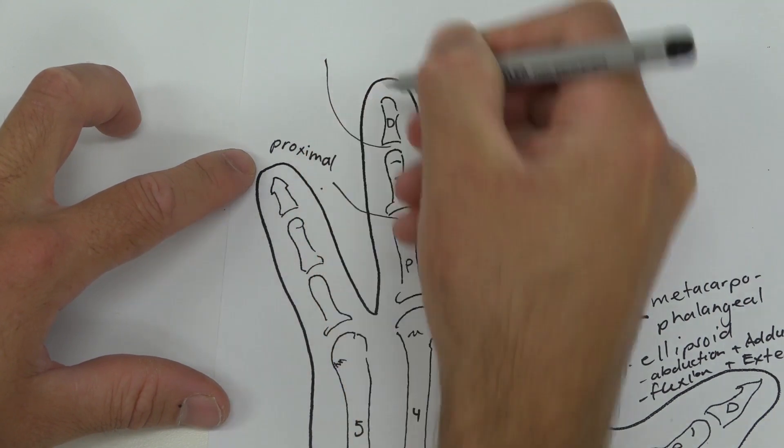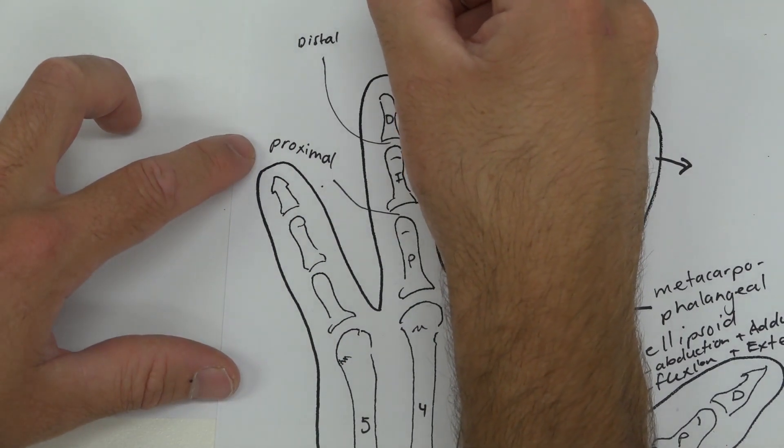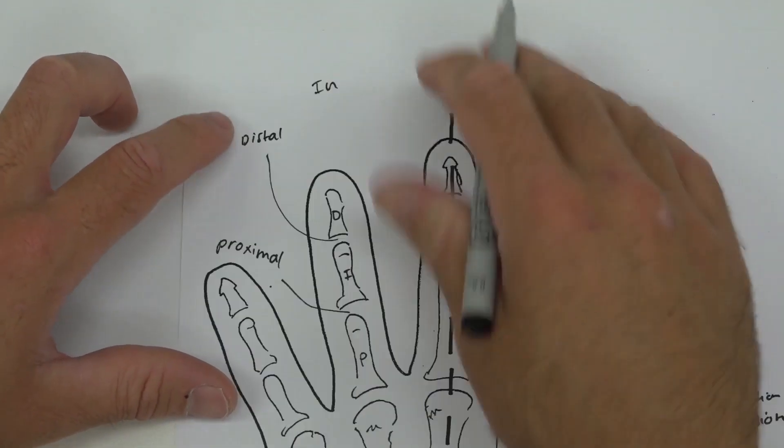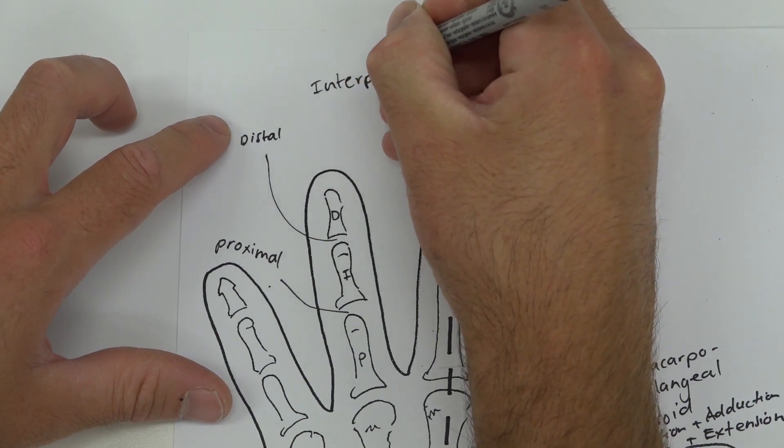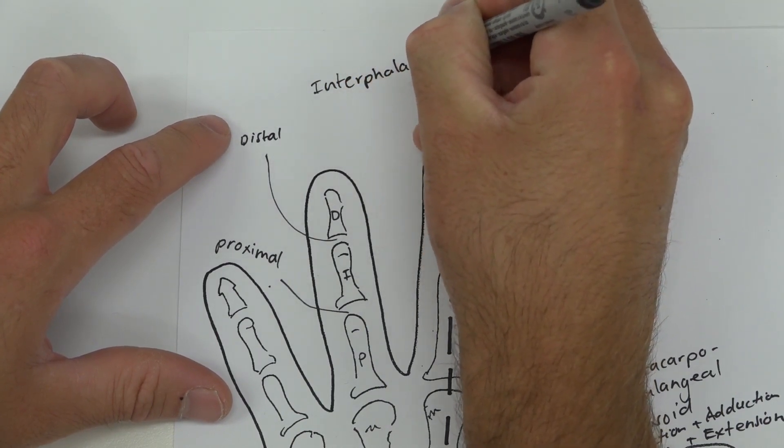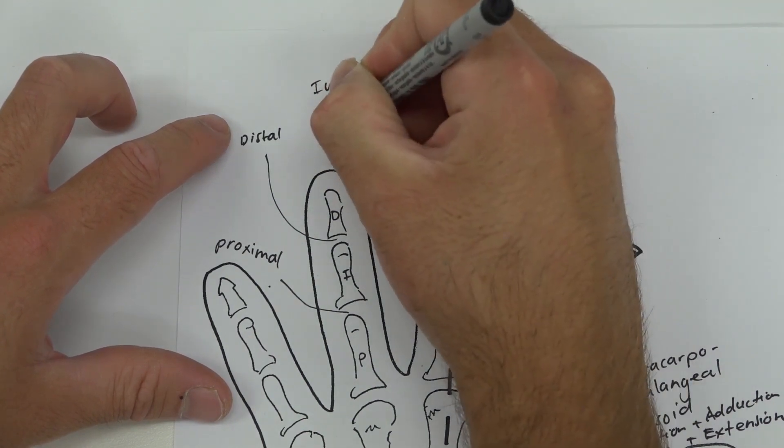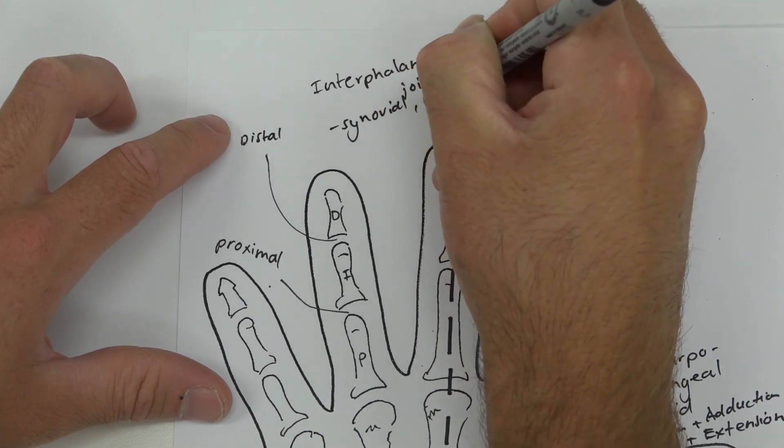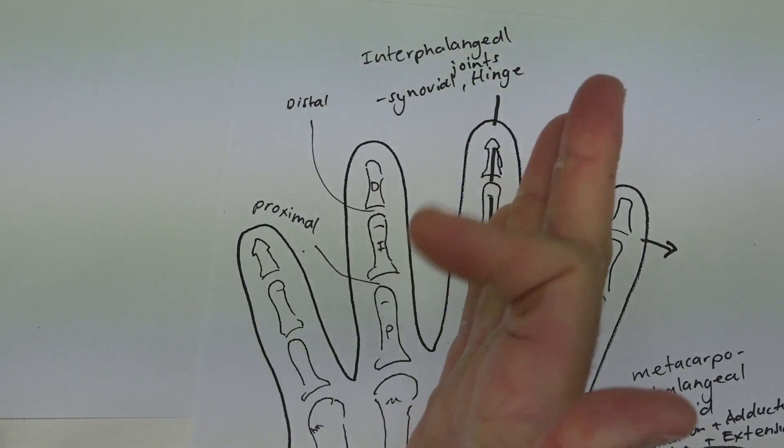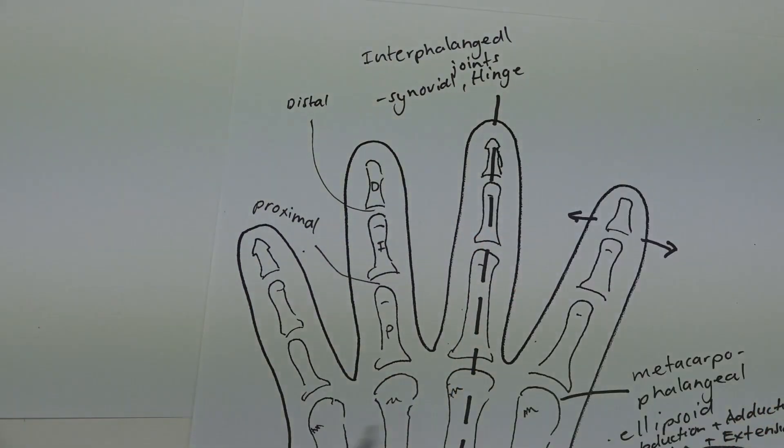Between these two here we have the proximal interphalangeal joint and the distal interphalangeal joint. These joints are hinge joints. Interphalangeal joints are synovial and hinge in their shape. Therefore, all they do is flex and extend—you can demonstrate that with your own finger: flexion of the fingers and extension of the fingers to straighten them out.